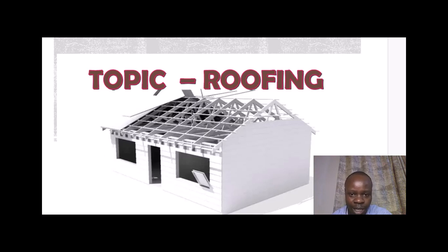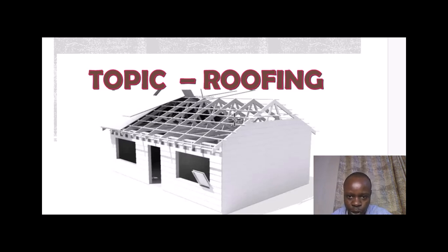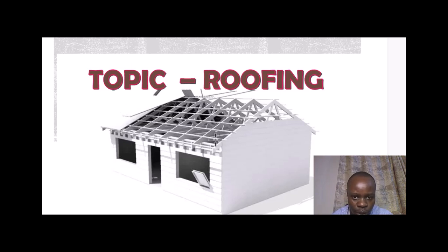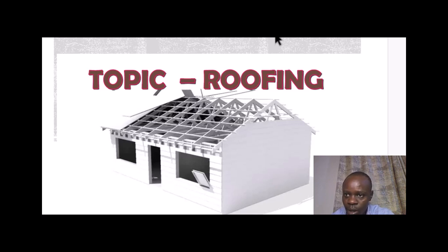The trusses are here — you can see the ones that are running. The V-shaped structures, those are the trusses. And then the one at the top of it — leave alone the smaller ones running across — we have the rafters.